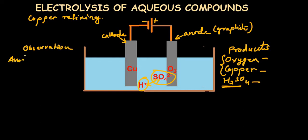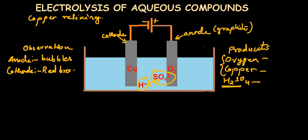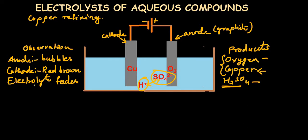So there are actually three products: oxygen, copper, and sulfuric acid. The observations are: at the anode, colorless bubbles of oxygen gas are produced; at the cathode, a red-brown deposit of copper forms; and the electrolyte fades in color because copper sulfate was blue, and it has now changed to colorless sulfuric acid.